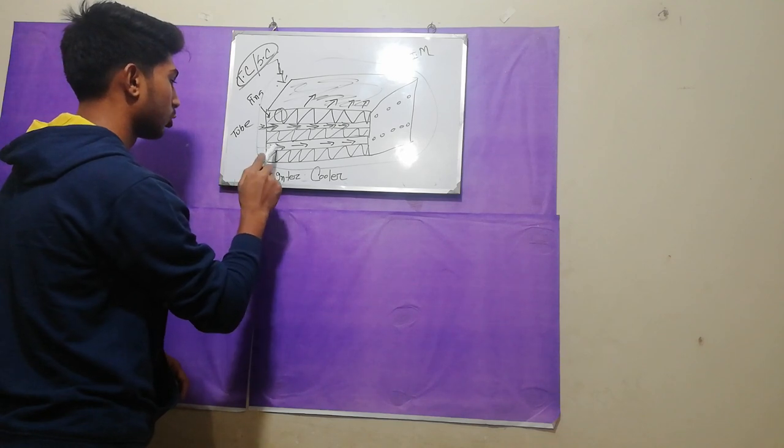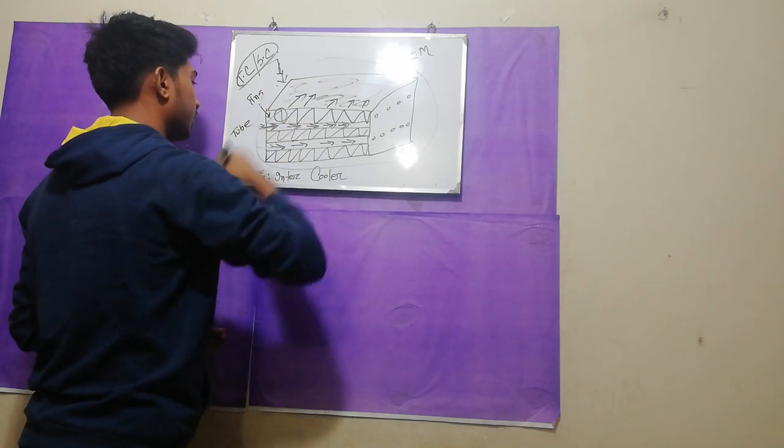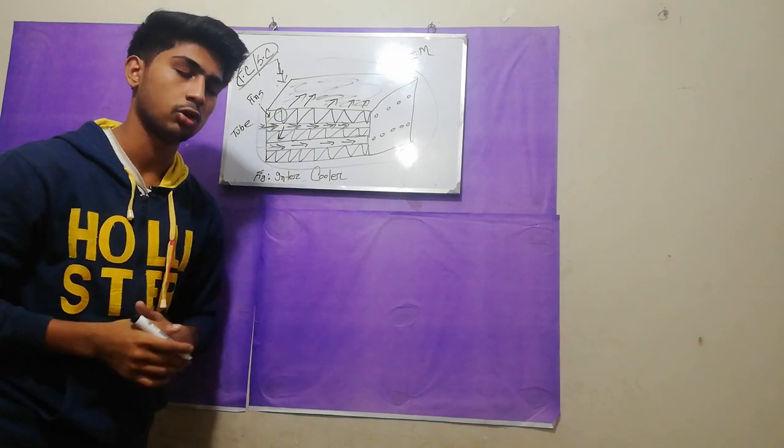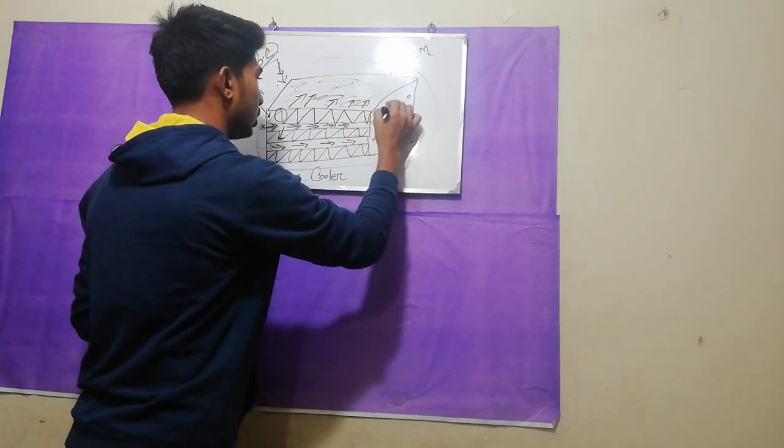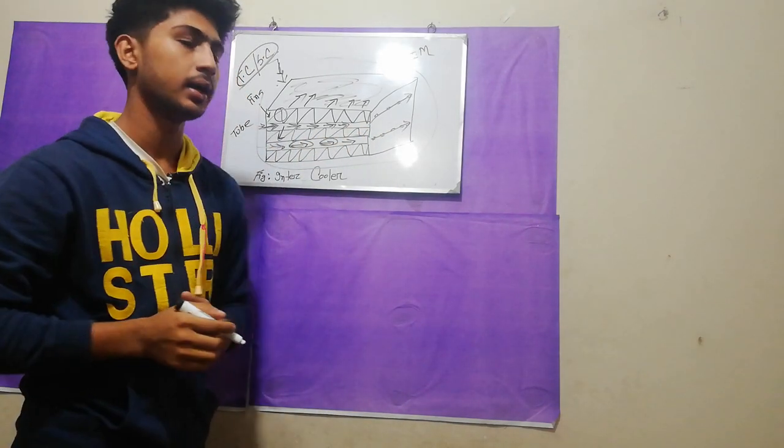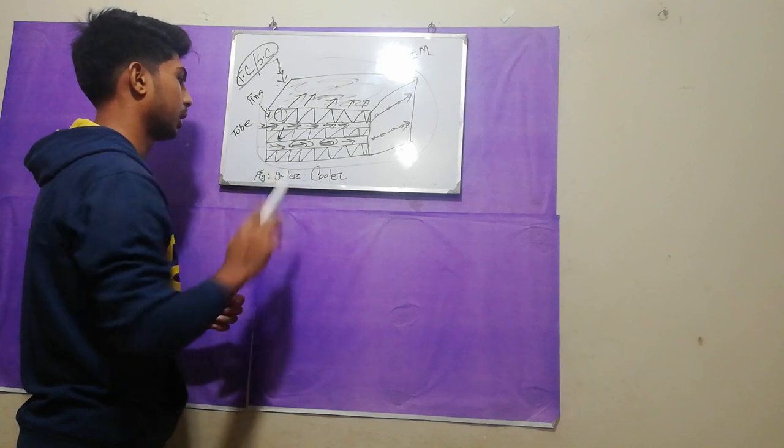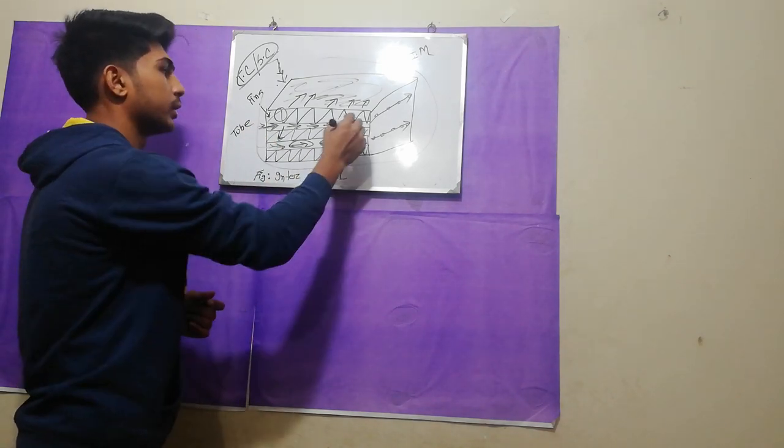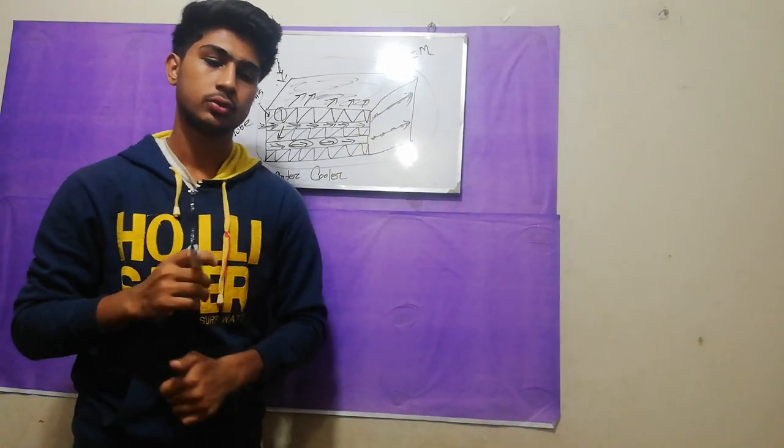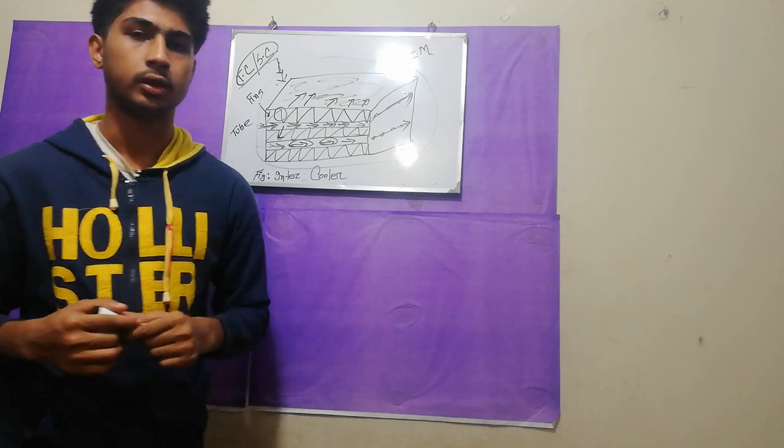So the cooled air tube goes into the intake manifold. Here you can see the tube in the diagram. This should make the topic clear - the cooled air goes into the intake manifold. That's it. If you have any questions, you can leave a comment and I will make a video to answer them. Thank you so much.